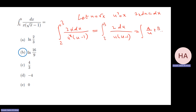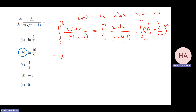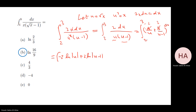Using partial fractions: A/u + B/(u-1). To find A, cover u and substitute zero — that gives minus 2. To find B, cover (u-1) and substitute 1 — that gives 2. So the integral becomes: minus 2 ln|u| plus 2 ln|u-1|, evaluated from 2 to 3.